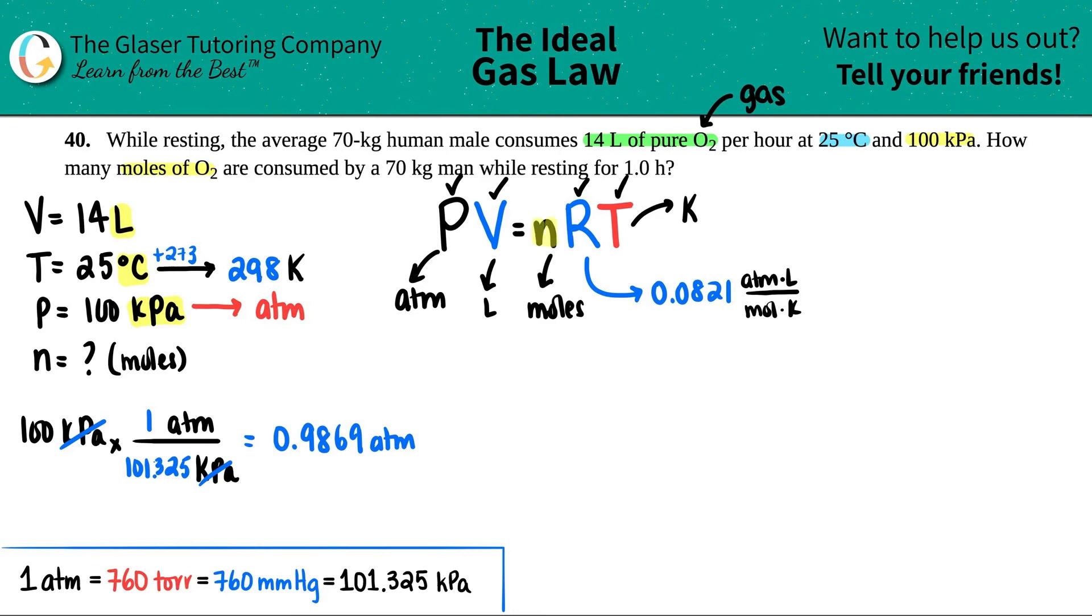We're going to solve for the n. So let's just plug in our numbers. I'm going to plug in my new ATM value, 0.9869 times by the volume, which was 14. Close that up. This equals solving for the number of moles. I just like to put it as X. And then I'm going to times it by the 0.0821. And then I'm going to times it by the Kelvin 298.